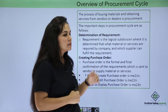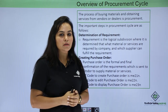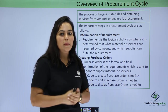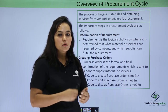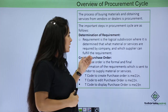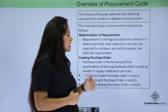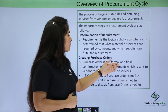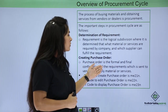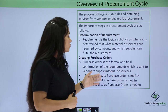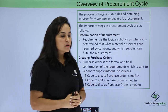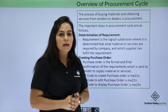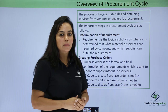The next step is creating a purchase order. Once the vendor has been finalized from which you are buying the computer, you will place an order with that vendor. That order is termed as a purchase order. A purchase order is the formal and final confirmation of the requirement which is sent to the vendor. You can create a purchase order using transaction code ME21N.